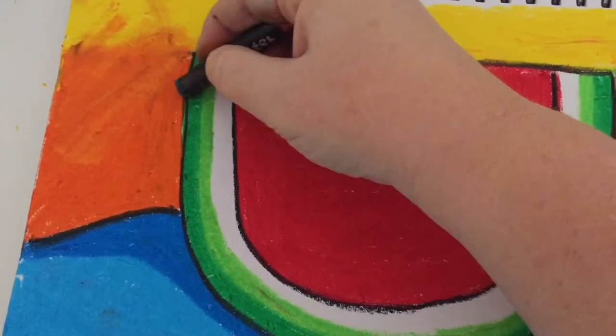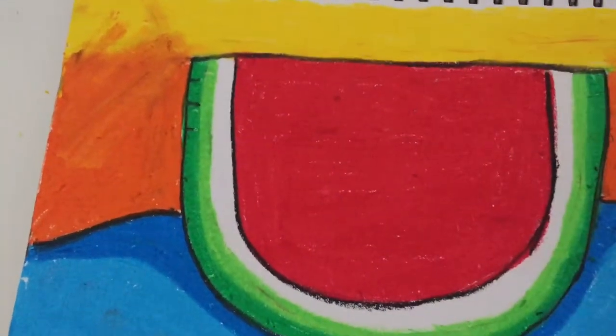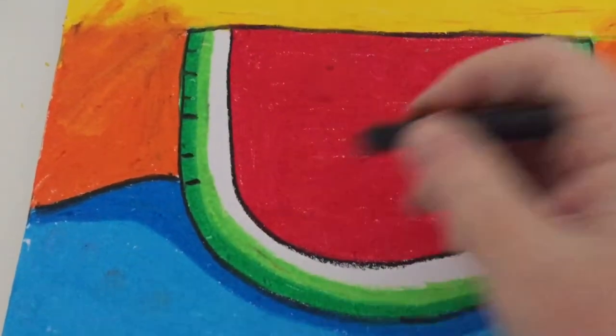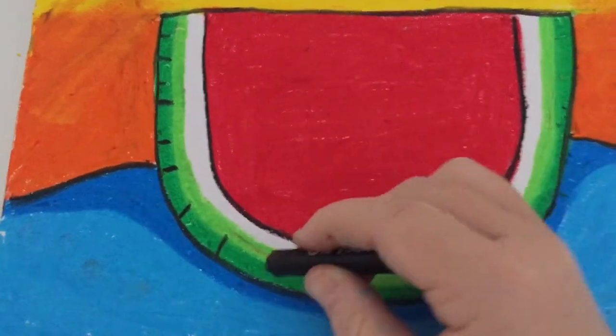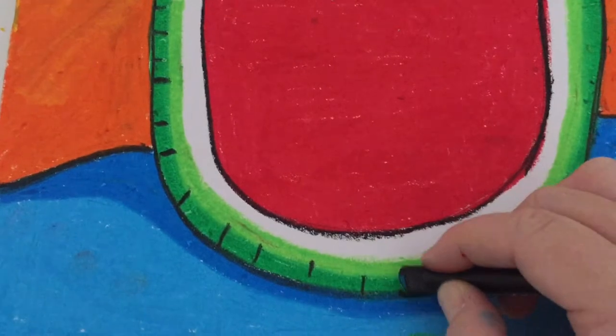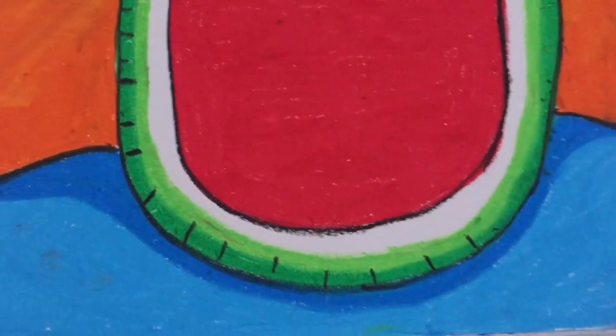Some short dashes on the inside of the skin. This just adds an interesting detail to the picture. Then finally I'm going to draw the seeds, so just finishing off those dashes on the outside edge there.